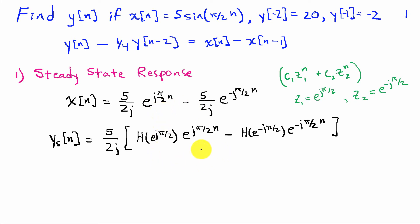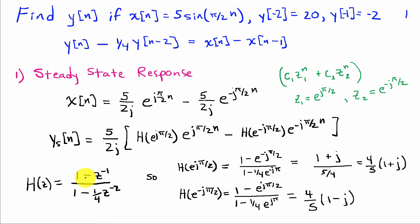For an input of this form, the output is given by the sum of the same two exponential signals with amplitudes and phase modified by H(z1) and H(z2). The system function H(z) = (1 - z^-1) / (1 - (1/4)z^-2), which follows directly from the difference equation coefficients. H(e^(jπ/2)) = (1 - e^(-jπ/2)) / (1 - (1/4)e^(-jπ)) = (1+j) / (5/4) = (4/5)(1+j), and similarly H(e^(-jπ/2)) = (4/5)(1-j).